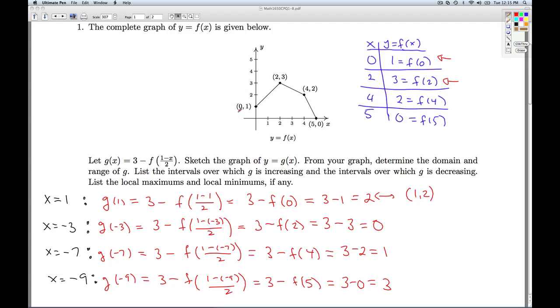So this first point, 0 comma 1, gets moved to the point 1 comma 2. The next point, I plugged in negative 3 and got out 0. Negative 3, 0. So that's where this point goes. The next point, I plugged in negative 7, I got out 1. Negative 7, 1. And the last point, I plugged in negative 9 and got out 3. So it's negative 9, 3. So that's where these last two points went.